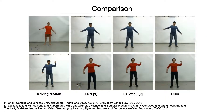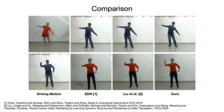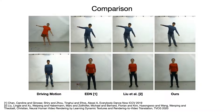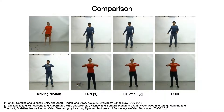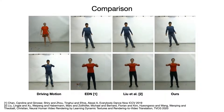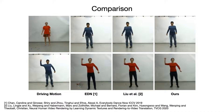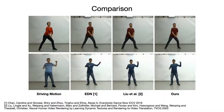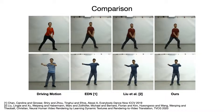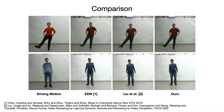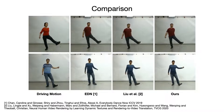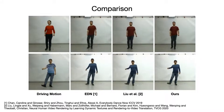Here we show results on the dataset of Liu and colleagues, who perform motion transfer using a pre-captured template mesh, which requires a recording of a static actor, mesh reconstruction with structure for motion, and a delicate post-processing. Our method, on the other hand, only requires a monocular training video and achieves comparable quality, while outperforming recent video-based performance cloning methods such as EverybodyDanceNow.